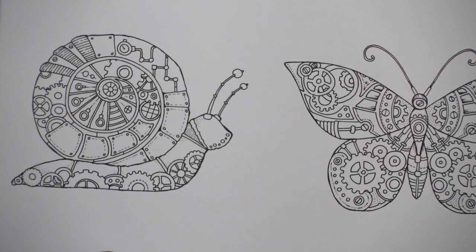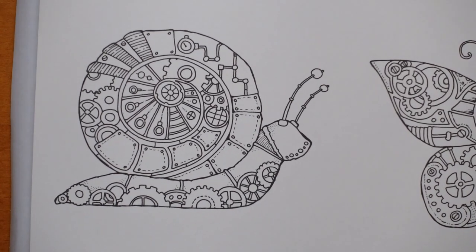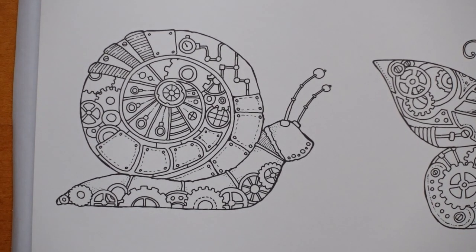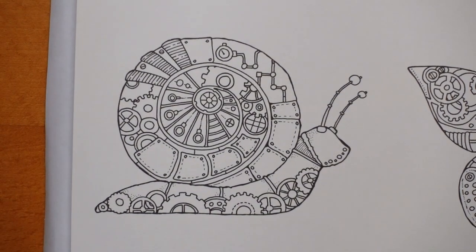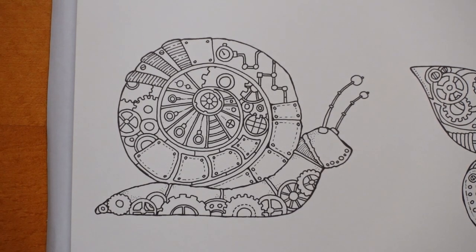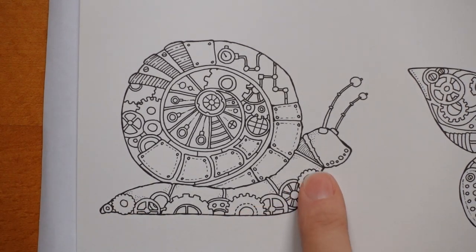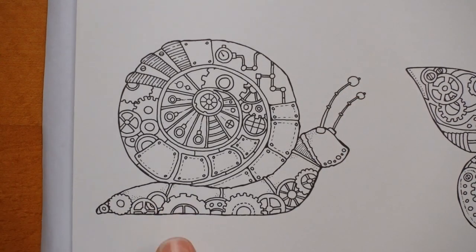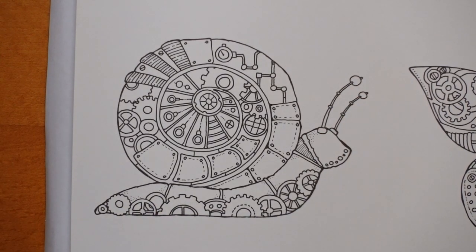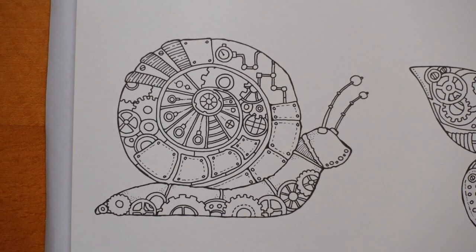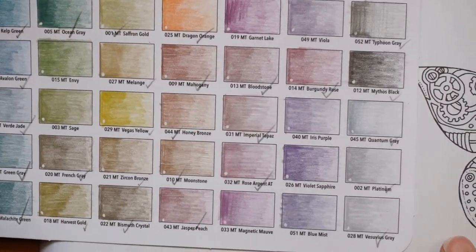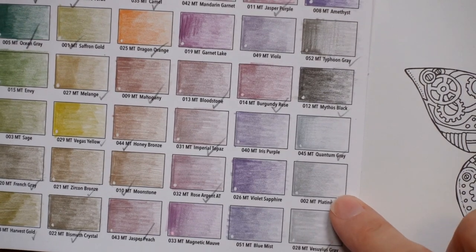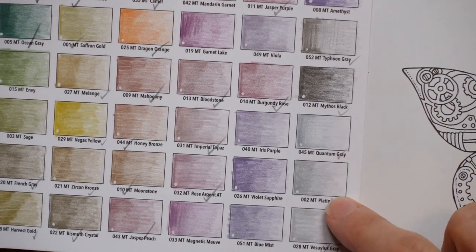So let's come in closer. We're gonna start with a snail today. Here he is. Now I'm thinking I'm gonna do the body in a sort of silvery grey so that's where I'm gonna start. In our metallic set we have, I'm just gonna grab my swatch chart that I made for these. Now we have all the greys here so we have the Vesuvius grey, the platinum grey and the quantum grey.